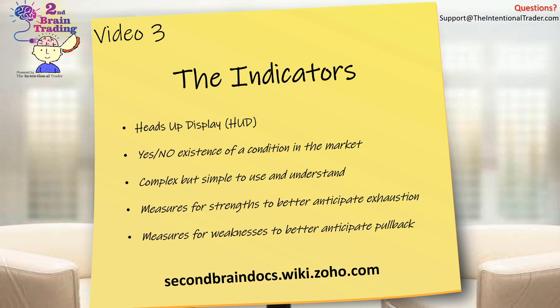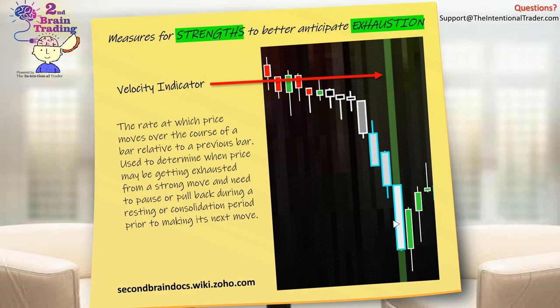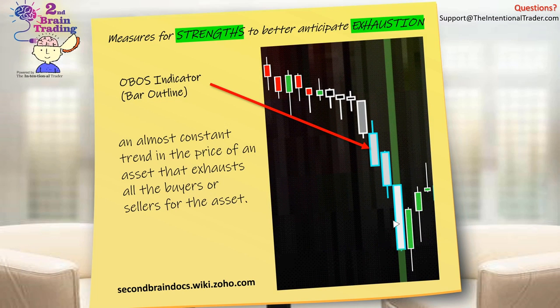On our trading charts in the trade room, we have our velocity indicator. This is the rate at which price moves over the course of a bar relative to previous bars, used to determine when price may be getting exhausted from a strong move. We're measuring a strong move where price needs to pause or pull back during a resting or consolidation period prior to making its next move — whether that's up or down we don't know. We just know that it's very likely that this is going to be a good point for that to happen.